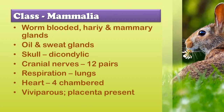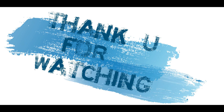Teeth are present — they are thecodont, heterodont, and diphyodont. Thecodont means the teeth are set in sockets. Heterodont means they have different types of teeth like canines, incisors, molars, and premolars. Diphyodont means they have two sets of teeth in their lifetime. External ears or pinnae are present. RBCs lack nucleus and are biconcave in shape. Kidneys are metanephric and they are ureotelic. They are homeotherms. Sexes are separate and fertilization is internal.